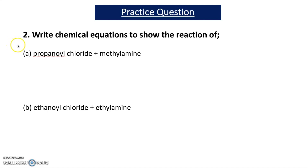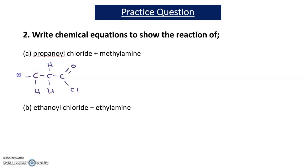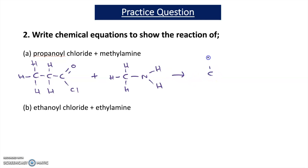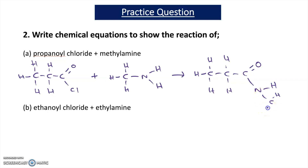Question 2 asks you to write chemical equations for reactions of acid chlorides and primary amines. Question 2A is the reaction of propanoyl chloride and methyl amine. Propanoyl chloride is CH3CH2C=OCl. When writing organic equations it's fine to draw out the full structural formula. When these compounds react, a substituted amide and hydrogen chloride gas are formed. The substituted amide is CH3CH2C=O NH CH3, and the other product is HCl.